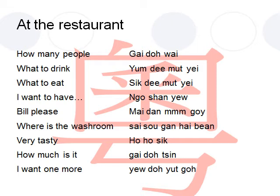Now if you want to tell people that the food you are eating is very good, you would say 好好食. 好好 means very, and 食 means eating. So 好好食 means very tasty in Cantonese.